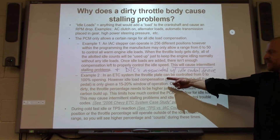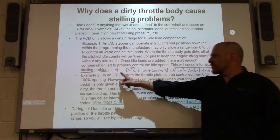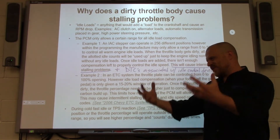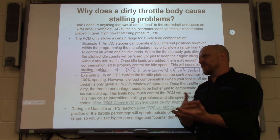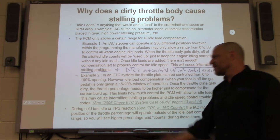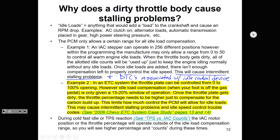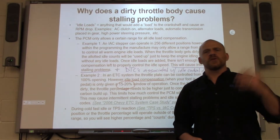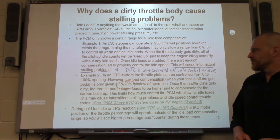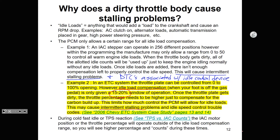So on an ETC system — electronic throttle control, or TAC, throttle actuator control, which is probably a better acronym — the throttle plate can be controlled from 0 to 100%. However, for idle load compensation, when your foot is off the gas pedal, you're only given about a 15 to 20% window. Once you get about 20%, that's all you're getting for idle load compensation, and you'll end up with stalling problems.